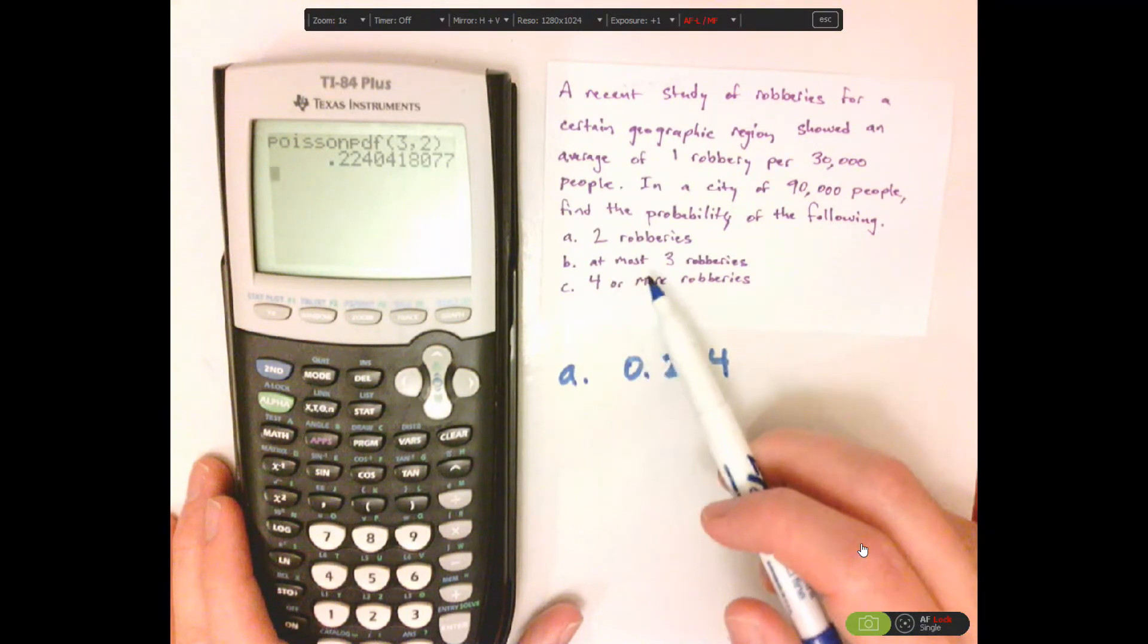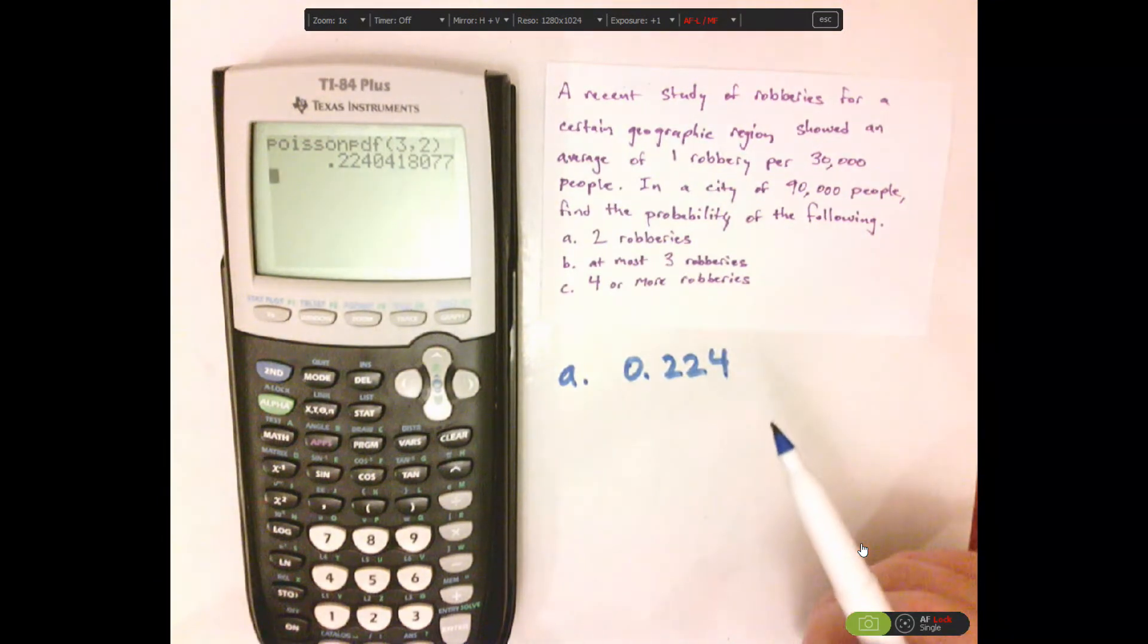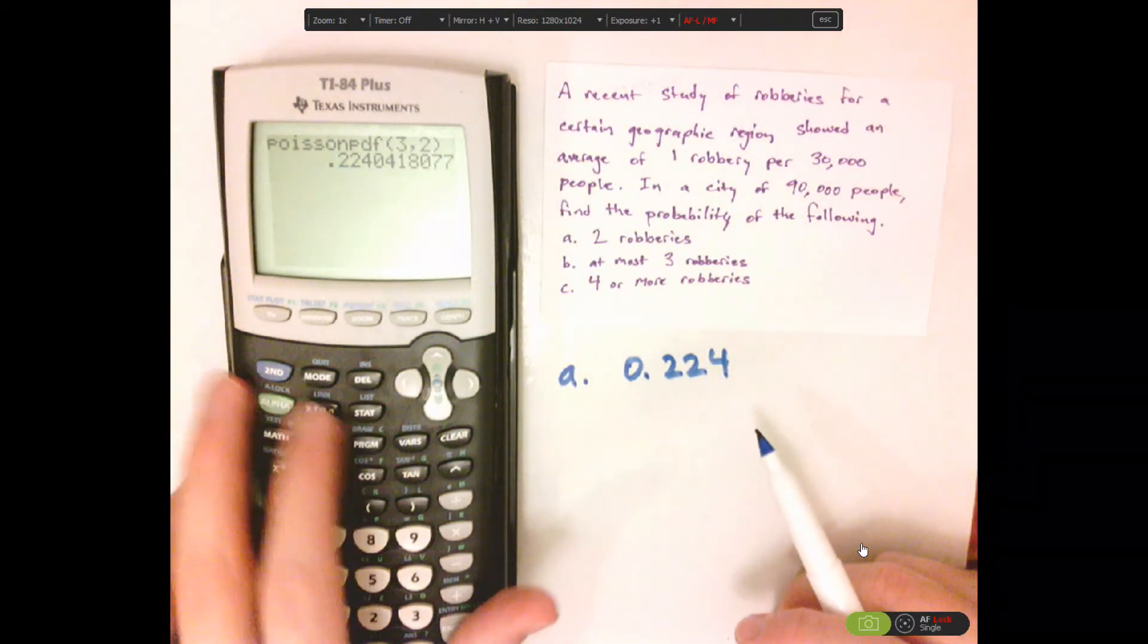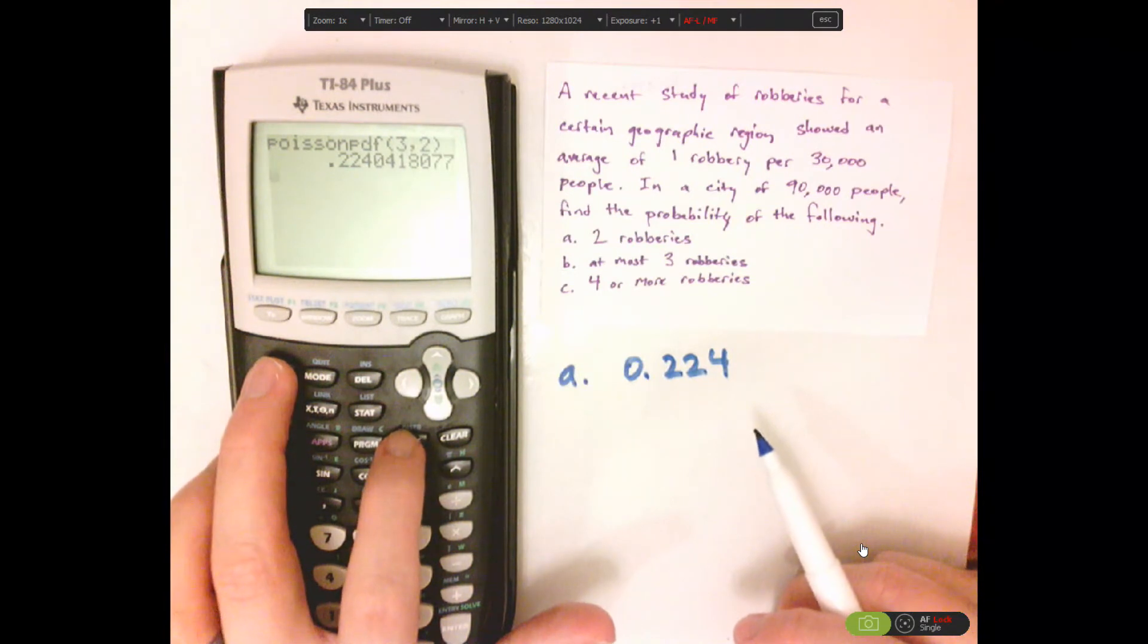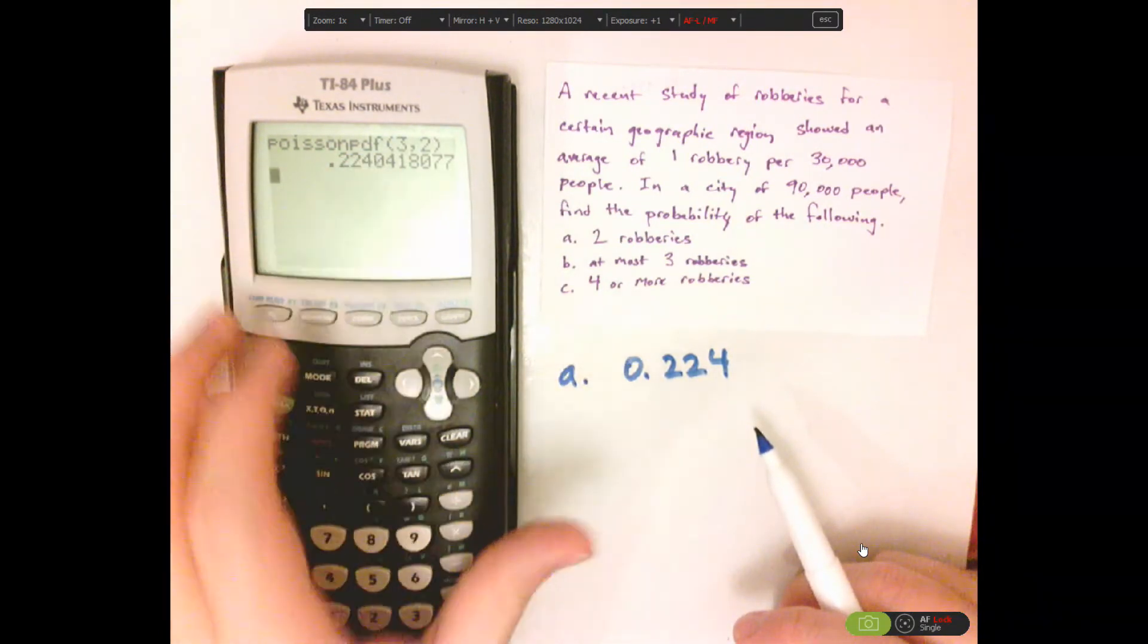Now, this one says at most three. So at most three is 0, 1, 2, or 3. It could be any of those. So for that, we're going to use Poisson CDF.